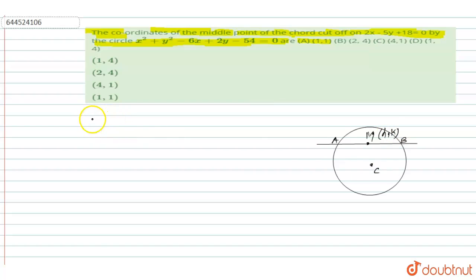The equation of the circle is given x square plus y square minus 6x plus 2y minus 54 equals 0. Then center is 3 comma minus 1.